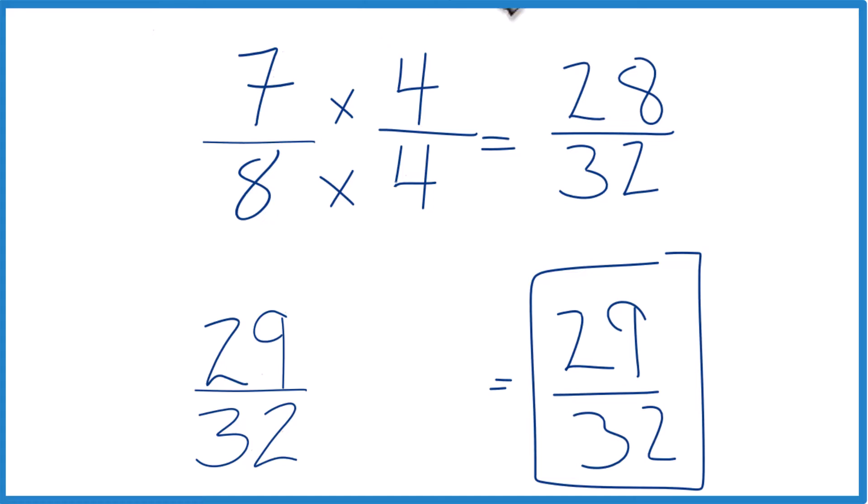And since these have the same value, they're equivalent. 29 32nds is greater than 7 eighths.